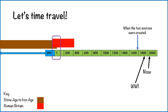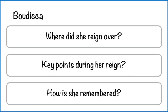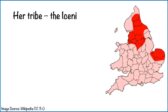Let's take a look at Boudicca in a bit more depth. Here are our three key questions: where did she reign over? What were the key points during her reign? And how is she currently remembered? Her tribe was the Iceni. If you look closely at the map, you can see I've left on the red part in the north of the country — that is the Brigantes territory. The Brigantes tribe covers a lot more land than the Iceni does. But let's focus on Boudicca at the moment.